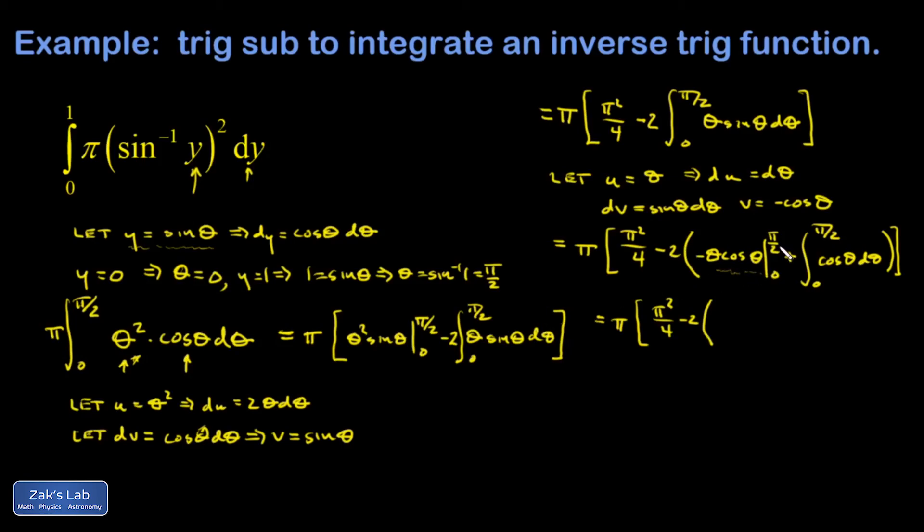When I plug in the upper limit, I get zero because the cosine of pi over two is zero. Then I subtract the lower limit, which is also zero because theta is zero out in front. So this whole thing vanishes. Then I look at my integral, the integral of cosine. It's just sine theta evaluated from zero to pi over two.